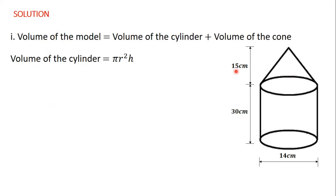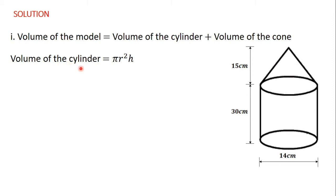To find the volume of this model, we split it into the two individual figures: the cylinder and the cone. So the volume of the model is equal to the volume of the cylinder plus the volume of the cone.